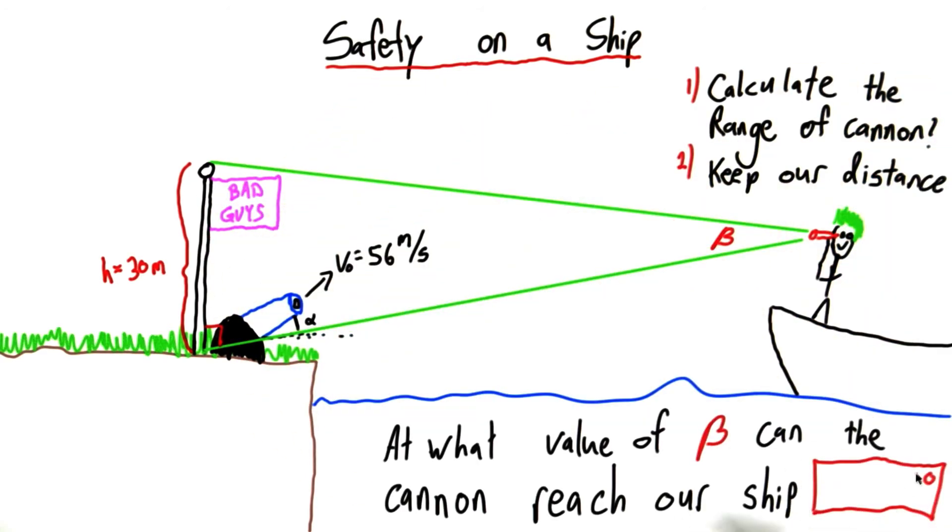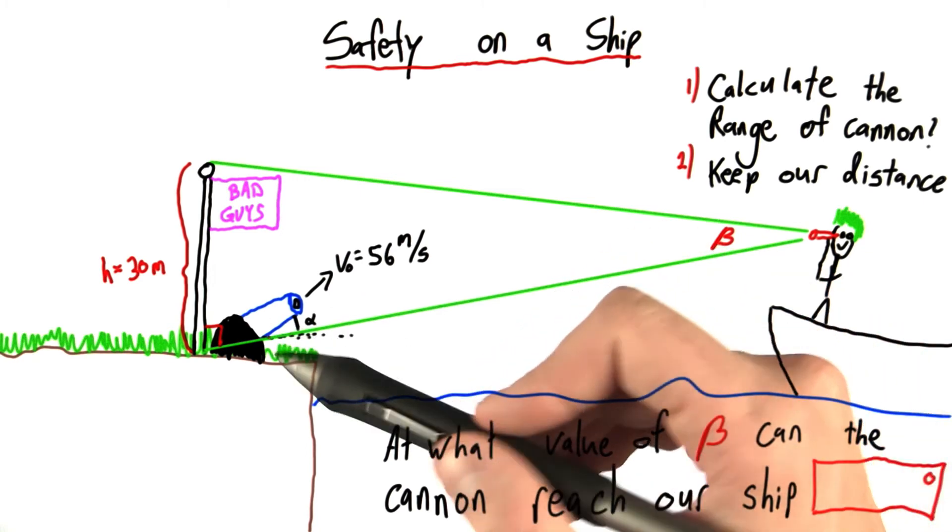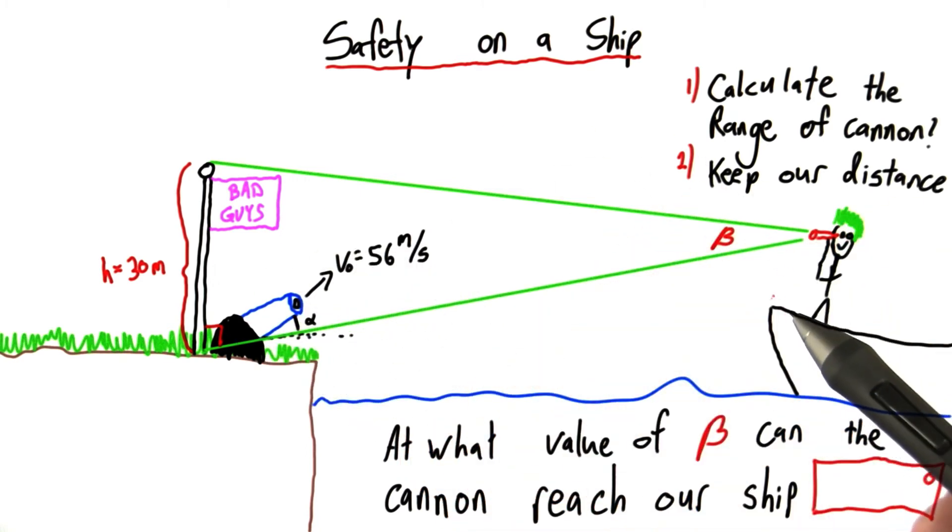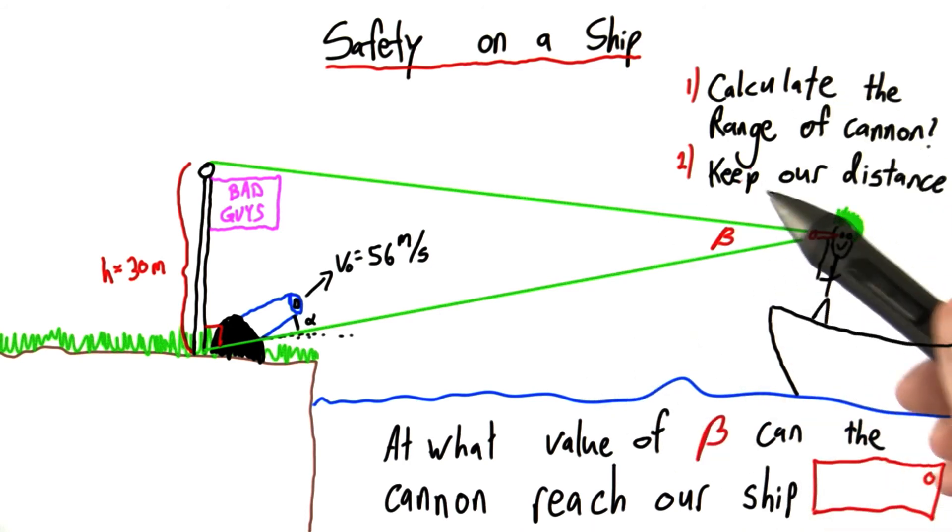I want to know at what value of beta can the cannon reach our ship? Now, this is a really tricky question. It involves a pretty complicated two-dimensional motion problem, as well as some trigonometry that we learned in the first unit. If you can put this all together and get the correct answer, I'll be very impressed.